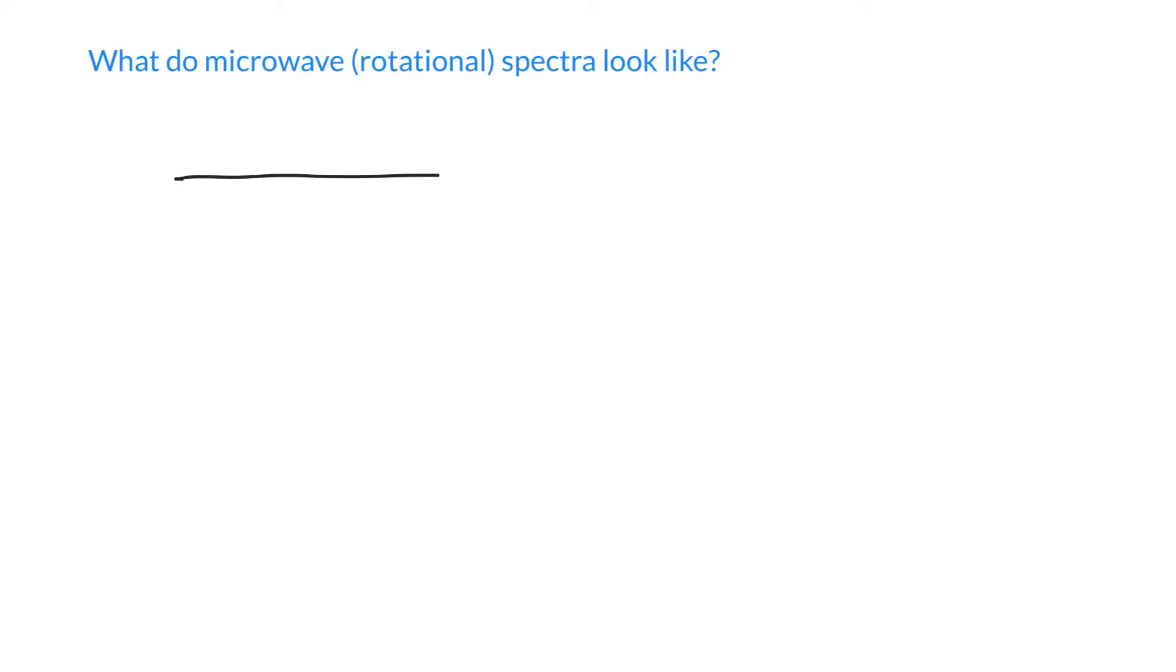So what do real microwave rotational spectra look like? We said if we want to work in wave numbers, they're pretty easy to spot. You see a series of lines that are equidistant with a spacing of 2B, and all of them are exactly the same. Obviously, no line at zero. That would be kind of hard to imagine. So what do they really look like?